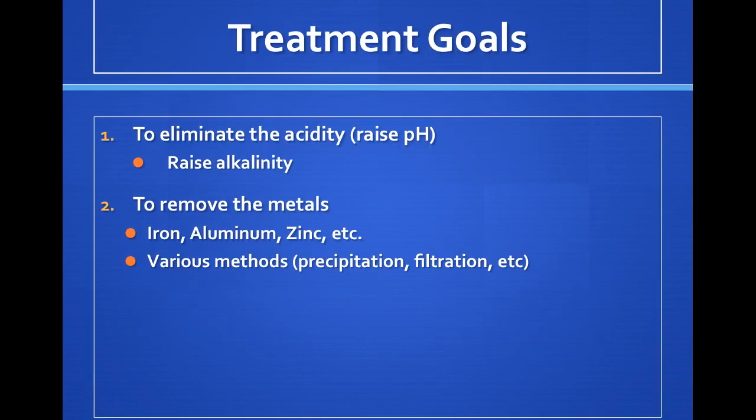Acid mine drainage can be treated to some extent. The goals of acid mine drainage remediation are to eliminate the source of acidity or raise the pH, accomplished by the addition of alkaline material. The second goal is to remove metals from the water, accomplished by settling ponds or sacrifice zones.